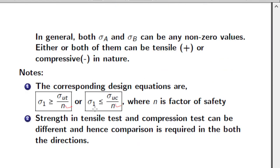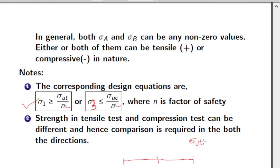Because we are using brittle material, we need to check in both directions. You have to check the first equation: the maximum stress sigma_1 should be less than sigma_ut divided by n for safety. Additionally, sigma_3, the minimum principal stress, should be within sigma_uc divided by n for the material to be safe. Earlier we wrote sigma_ut directly; now with a factor of safety, it becomes sigma_ut divided by n and sigma_uc divided by n.